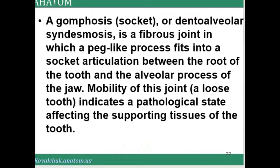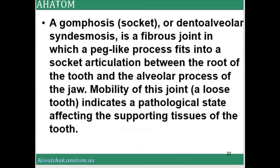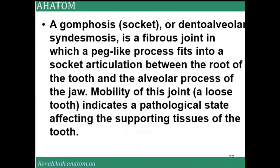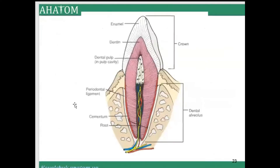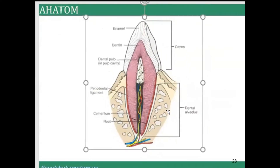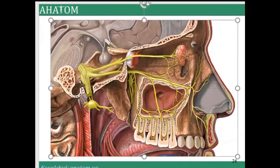Gomphosis, also called dental alveolar syndesmosis, is a fibrous joint in which a peg-like process fits into a socket — the articulation between the root of a tooth and the alveolar process of the jaw. Each tooth is located in a special dental alveolar cavity. An important clinical aspect concerns the large cavities in some bones.